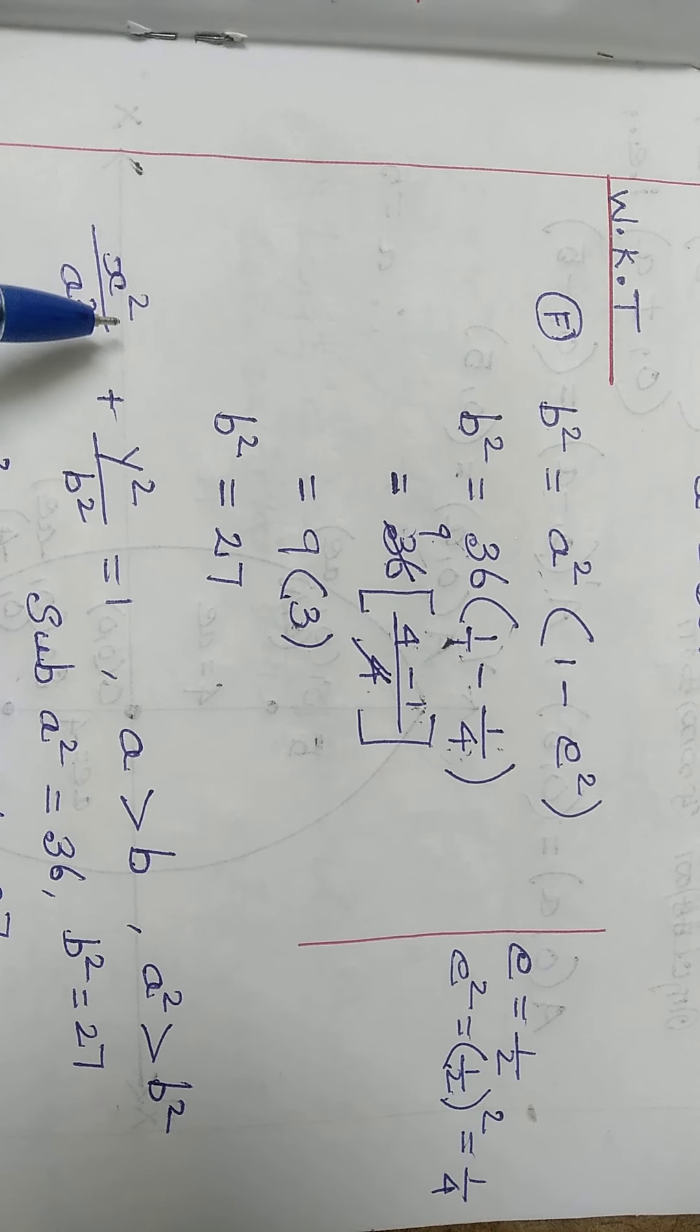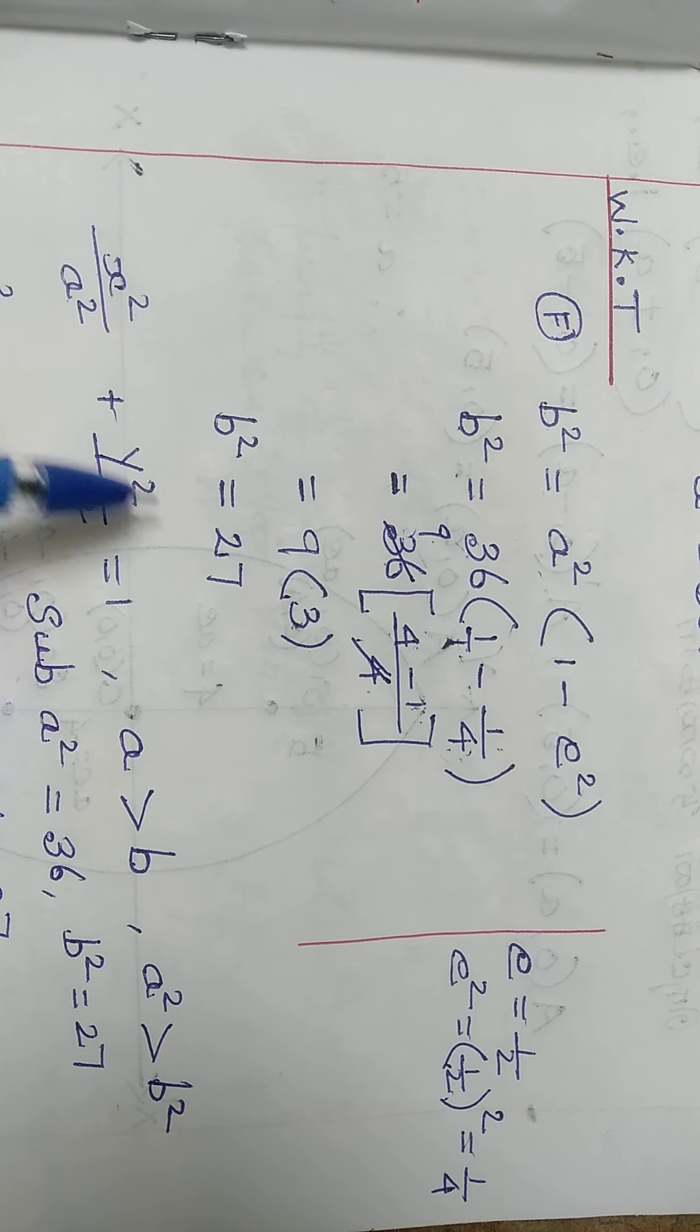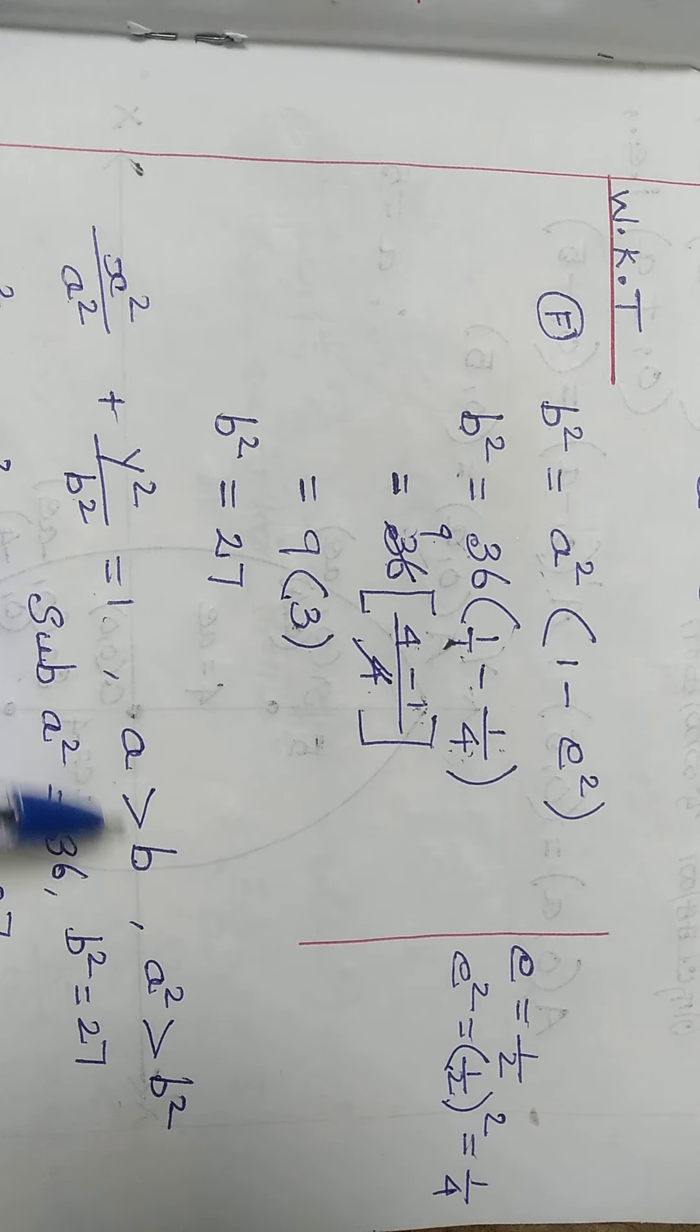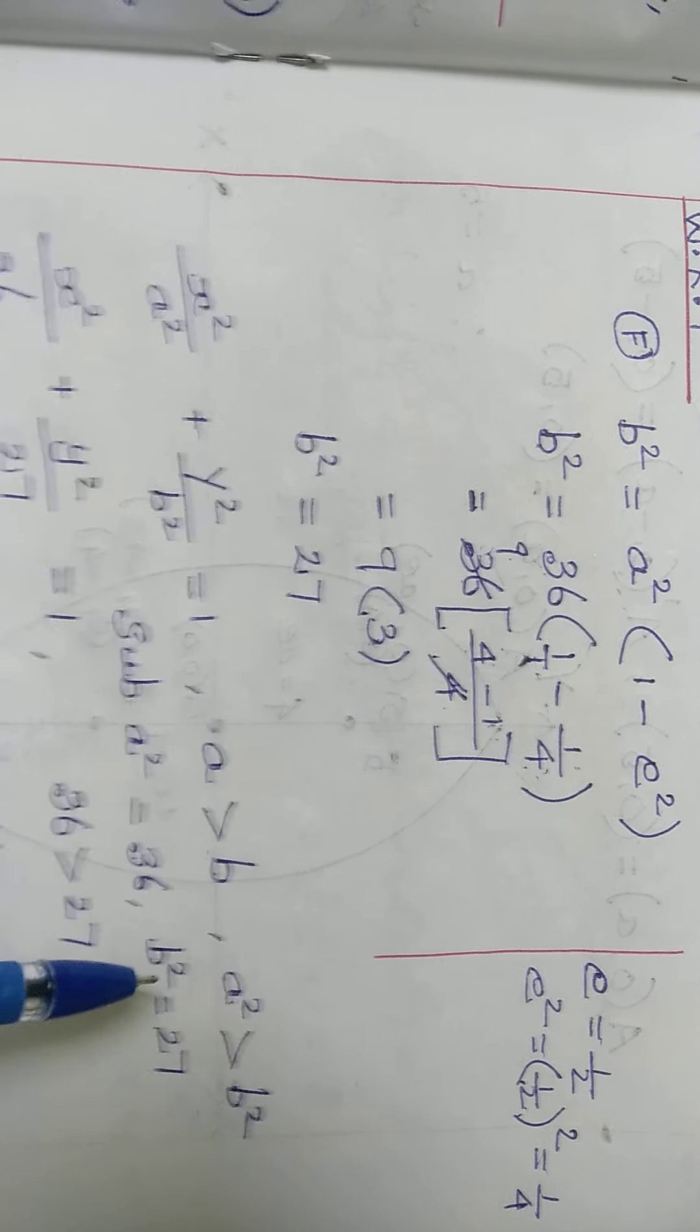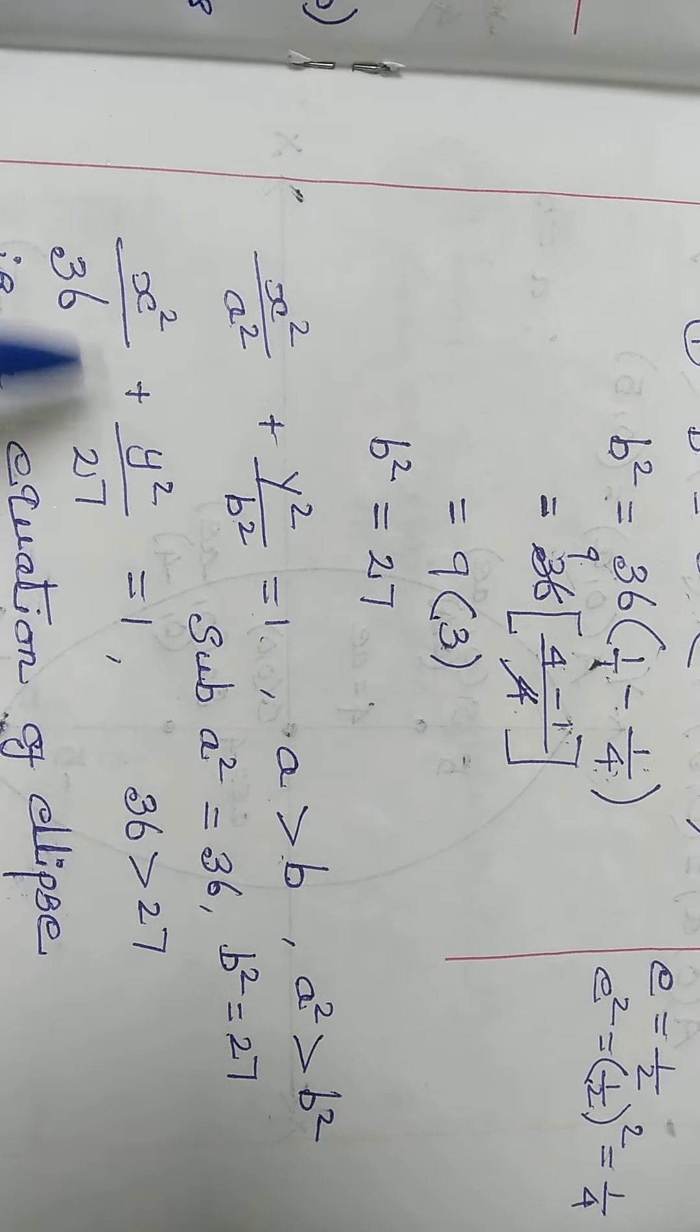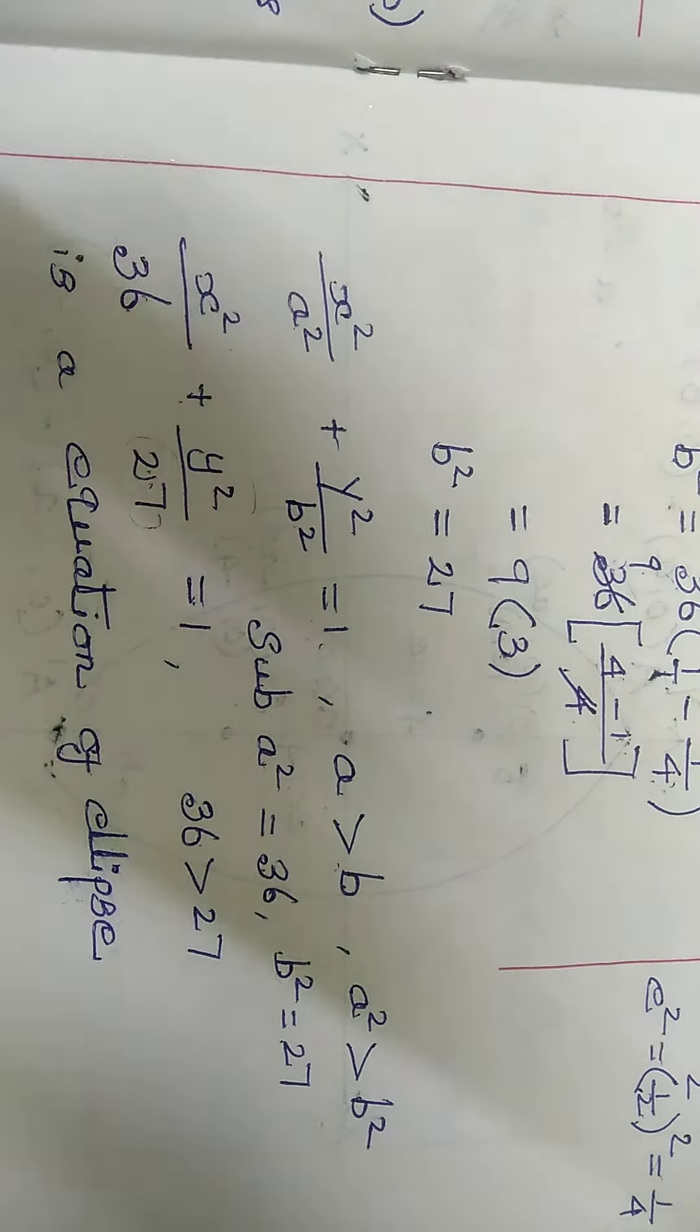The given ellipse is sleeping type, so x squared by a squared plus y squared by b squared equals 1, where a is greater than b. The a squared value is 36 and b squared value is 27. Therefore, x squared by 36 plus y squared by 27 is the equation of ellipse. Finished, completed students, thank you.